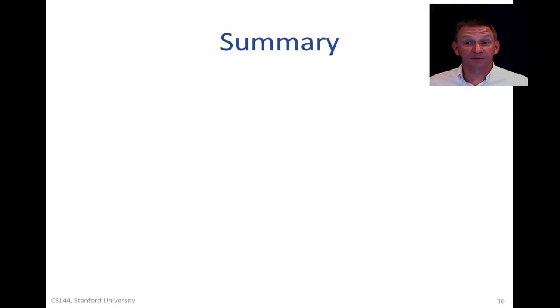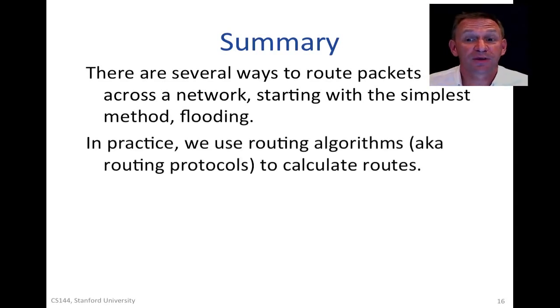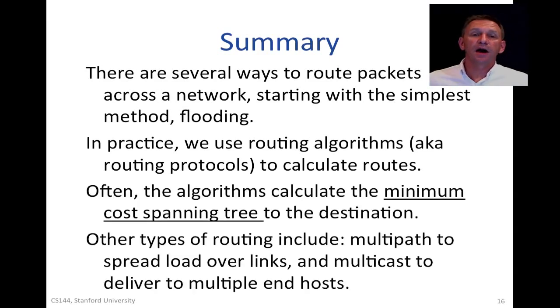So in summary, there are several ways to route packets across a network, starting with the simplest method, flooding. So in practice, we use routing algorithms, or also known as routing protocols, to calculate the routes and populate the forwarding tables. Often the algorithms calculate the minimum cost spanning tree to the destination, and we're going to see lots of examples of that soon. Other types of routing include multipath to spread traffic over links, and multicast to deliver to multiple end hosts. That's the end of this video.